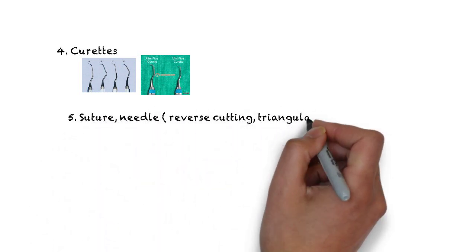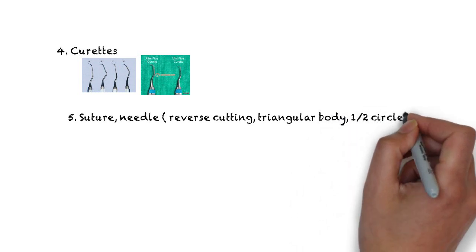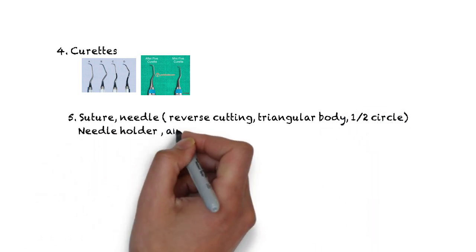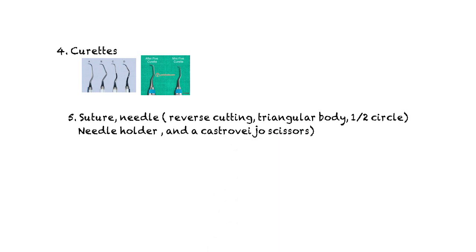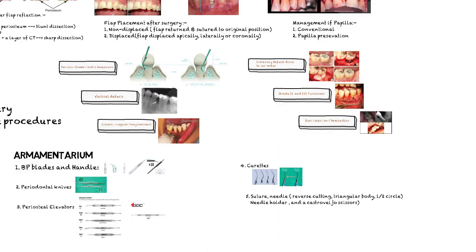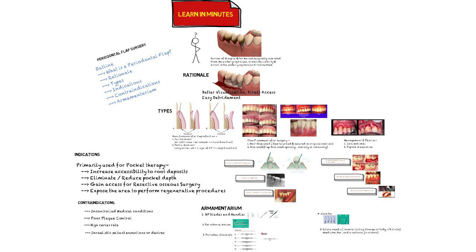And finally, we do require sutures: needles, preferably the reverse cutting triangular half circular, and the needle holder. And a must-have is a Castroviejo scissor, used for trimming of flaps, tissue tags, and sutures. That's all for now guys, thank you.